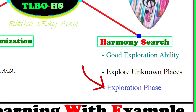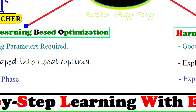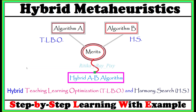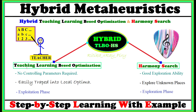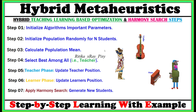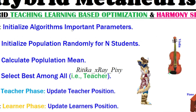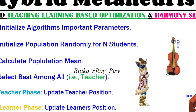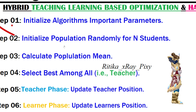We are using the harmony search algorithm for the exploration phase to explore the entire search space and find the optimal solution. For the exploitation phase, we use the teaching learning based optimization algorithm. By combining the merits of these two algorithms, we form the new hybrid TLBO and HS algorithm. The first step is to initialize all the important parameters required for both TLBO and harmony search algorithm.